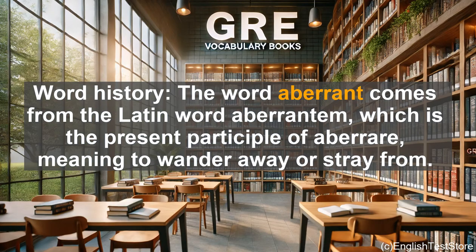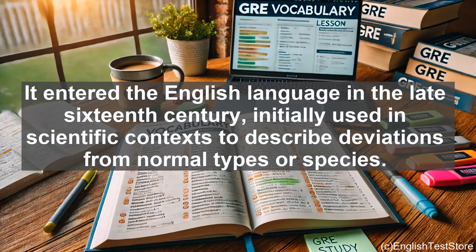Word history: the word aberrant comes from the Latin word aberrantem, which is the present participle of aberrare, meaning to wander away or stray from. It entered the English language in the late sixteenth century, initially used in scientific contexts to describe deviations from normal types or species.